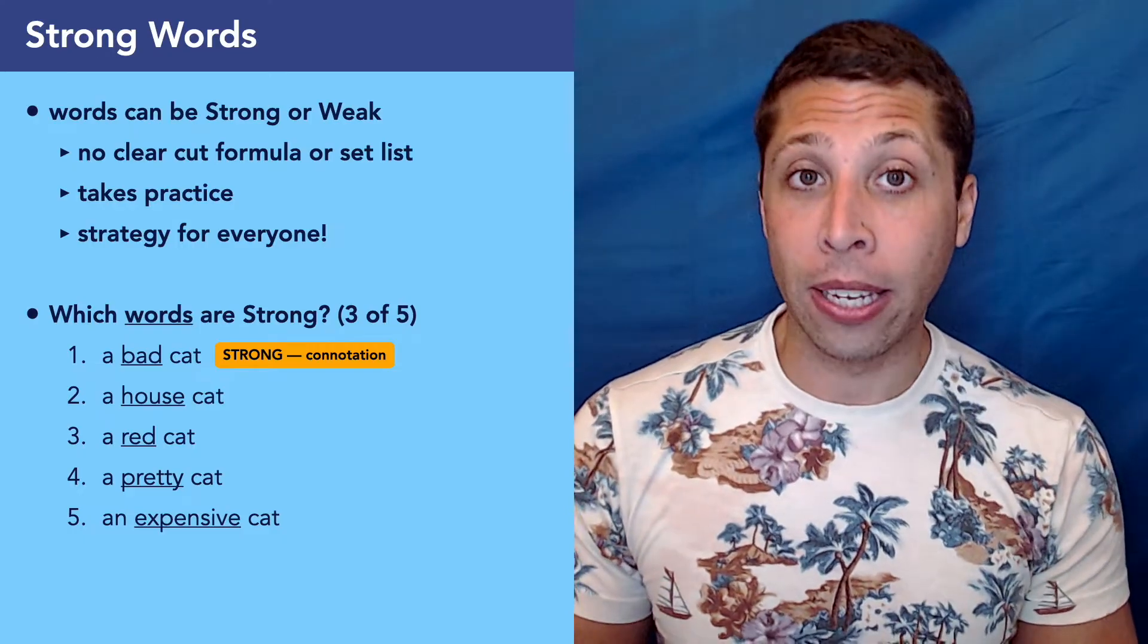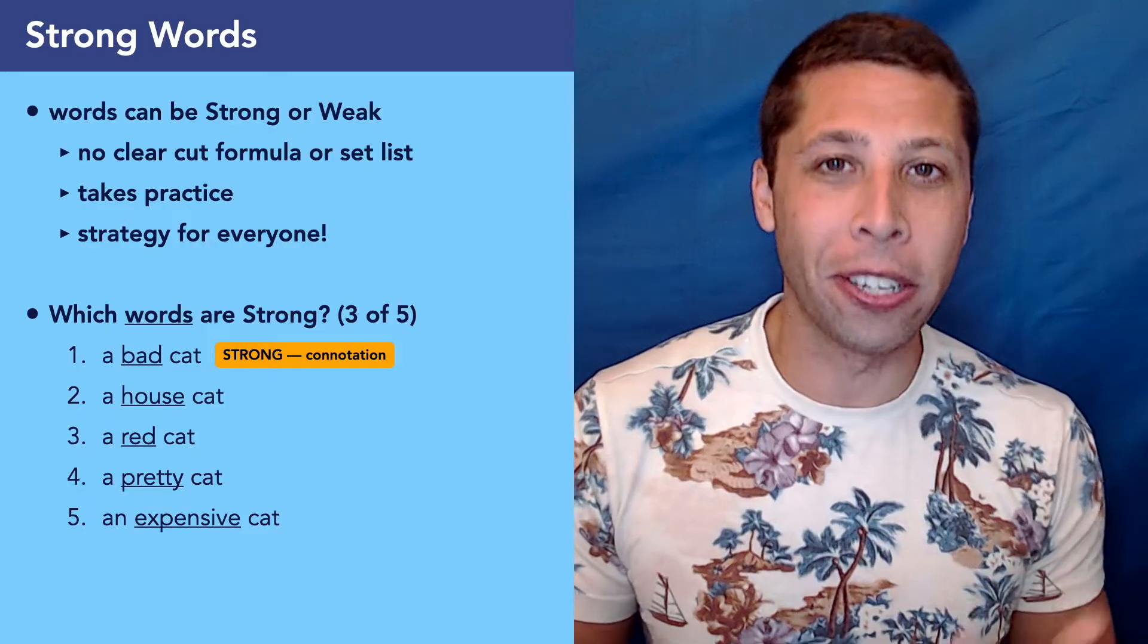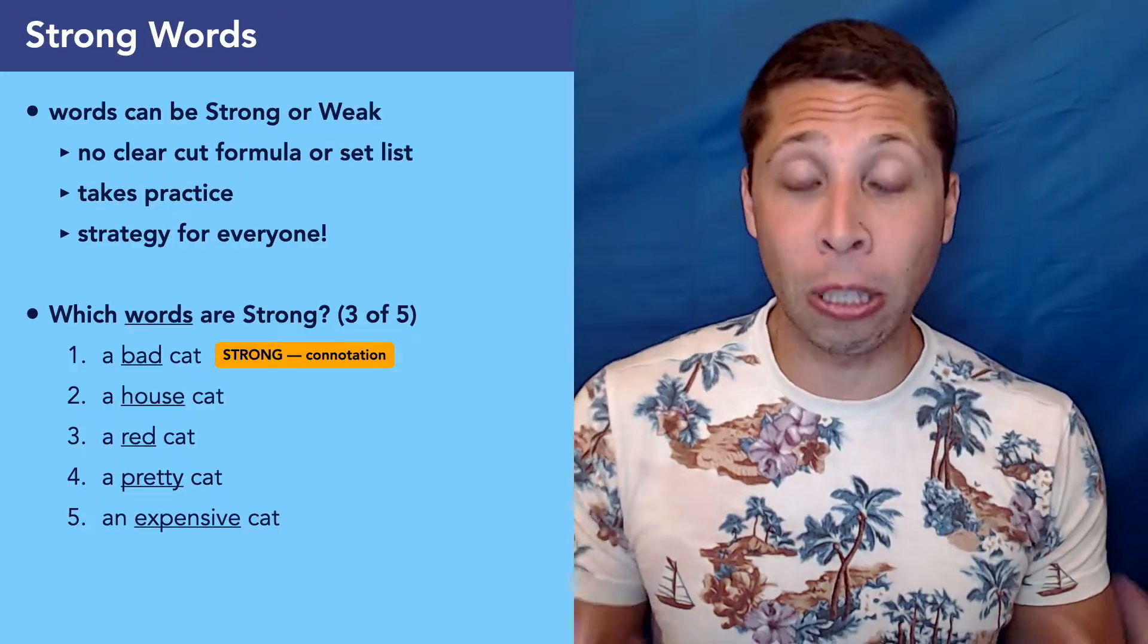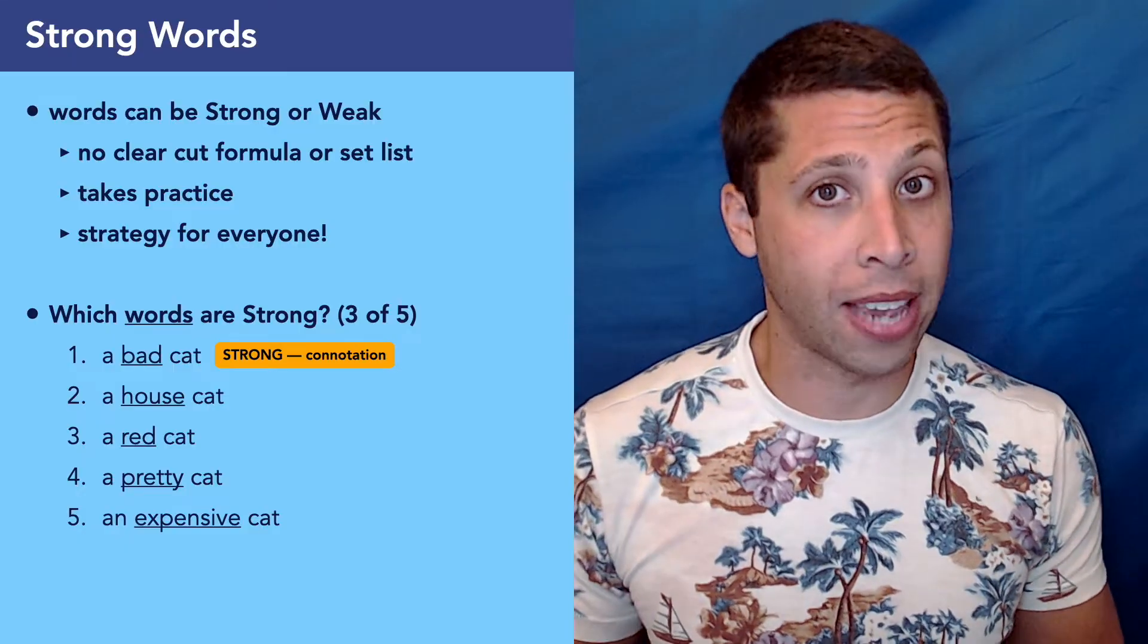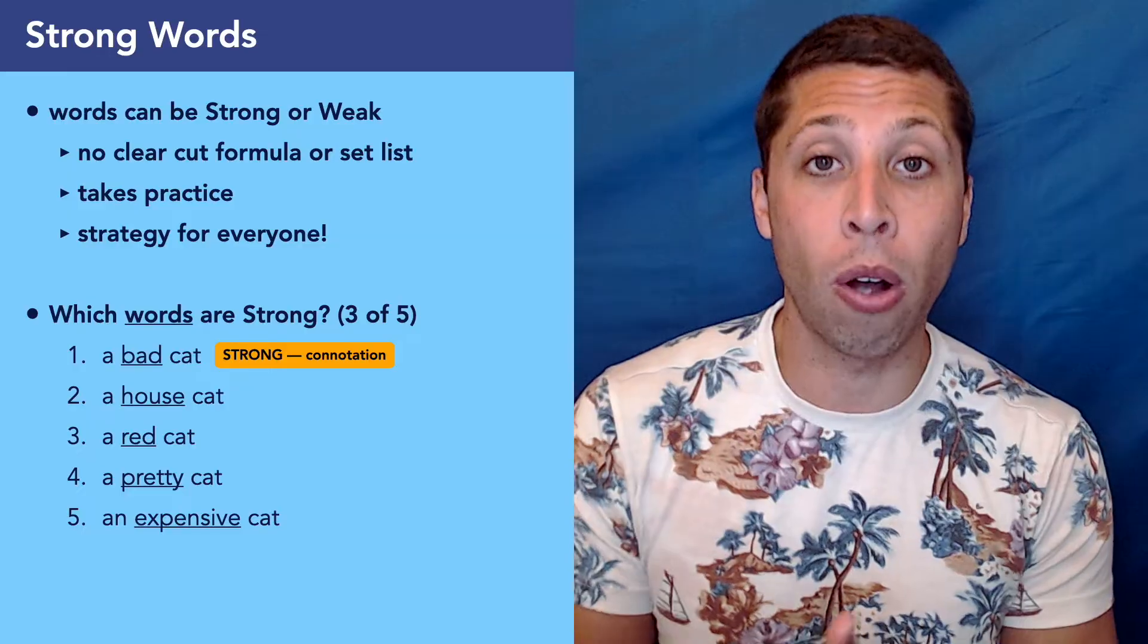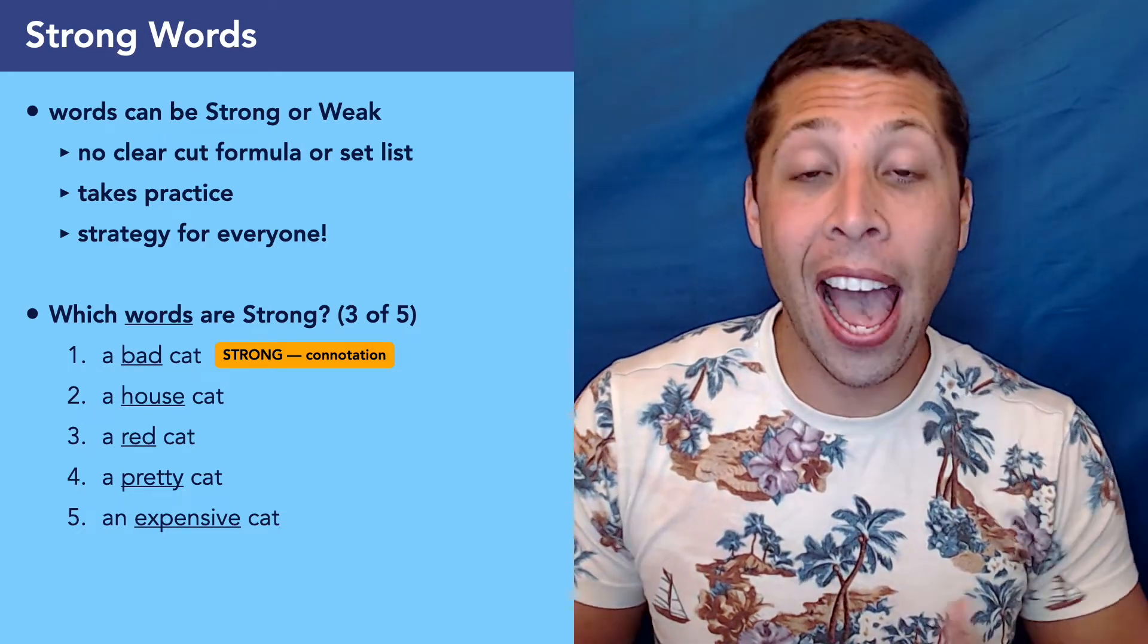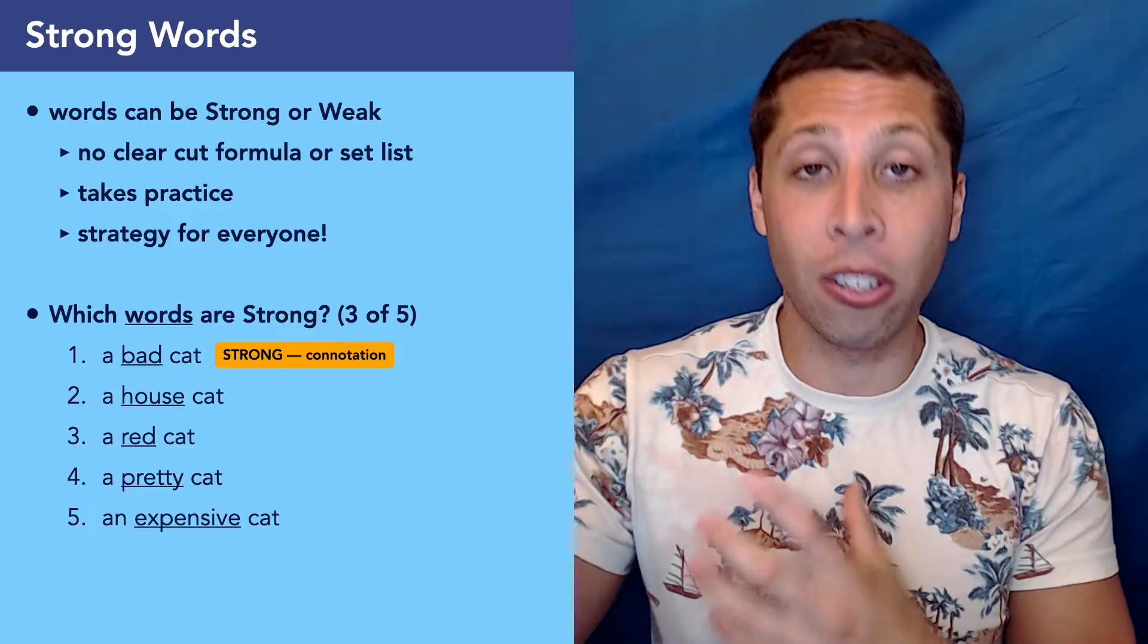House here is a weak word and the SAT loves to do this where they just give you tons of description that somehow matters for understanding the image, but not in a meaningful way that moves the story along. Red cat, also weak. And you might be thinking, but there aren't red cats. That's weird, right? Red, there's orange cats, but red cats, that's very strange. Why wouldn't that be important information? Well, mostly because it's still description.